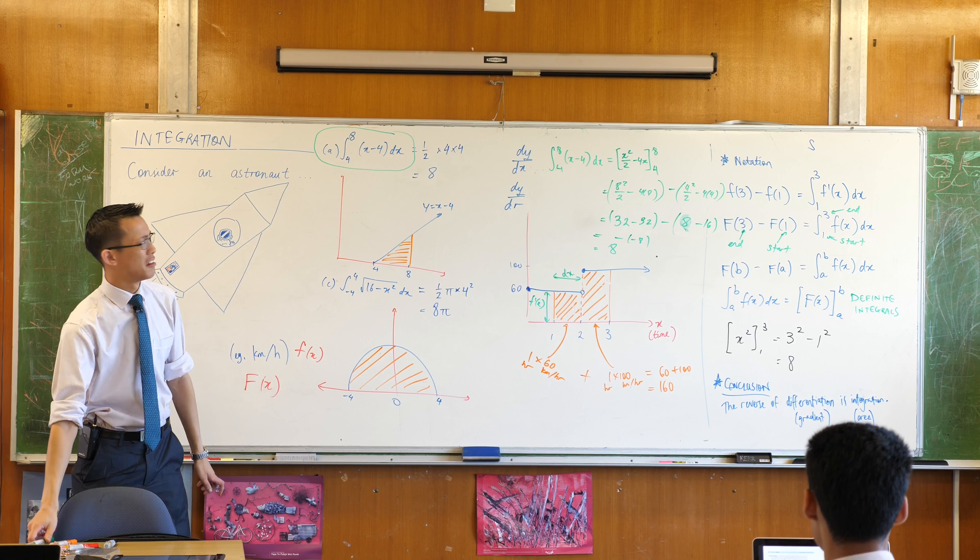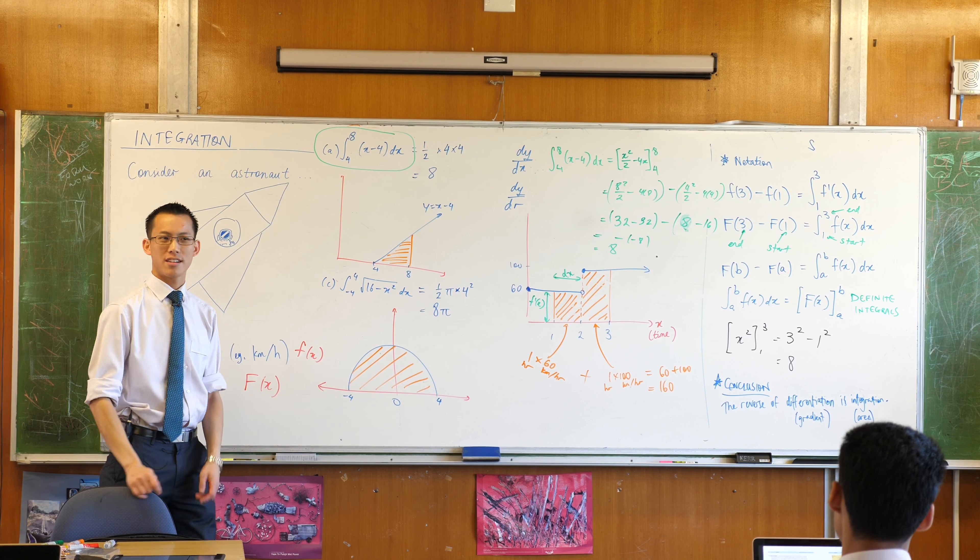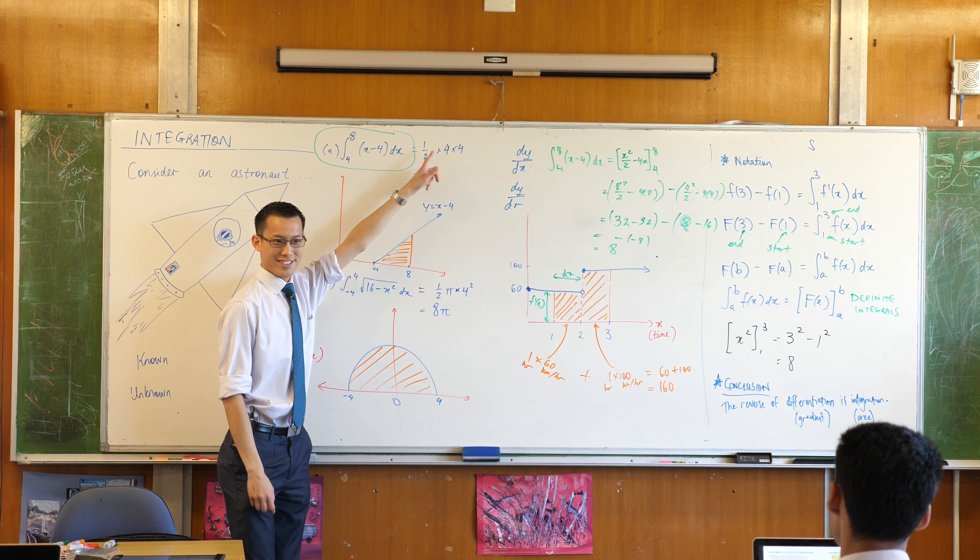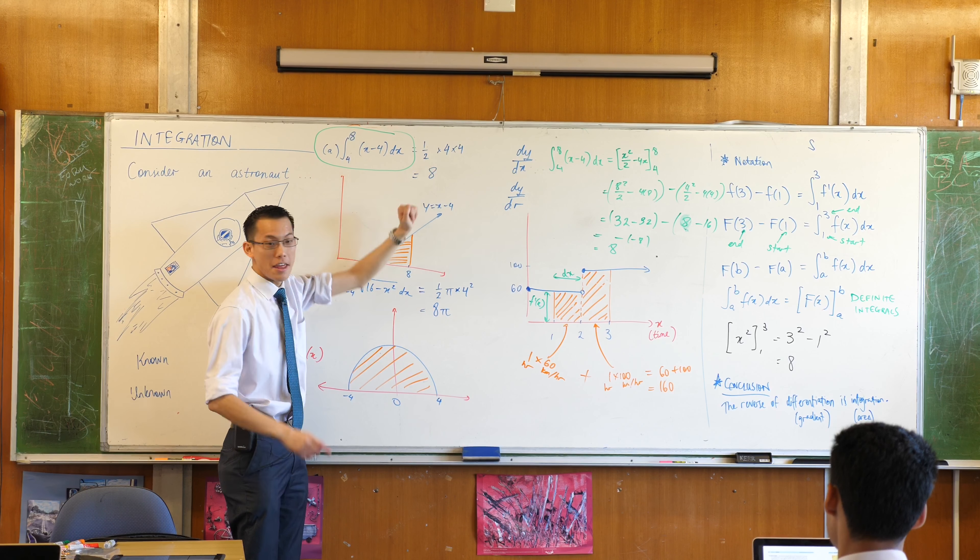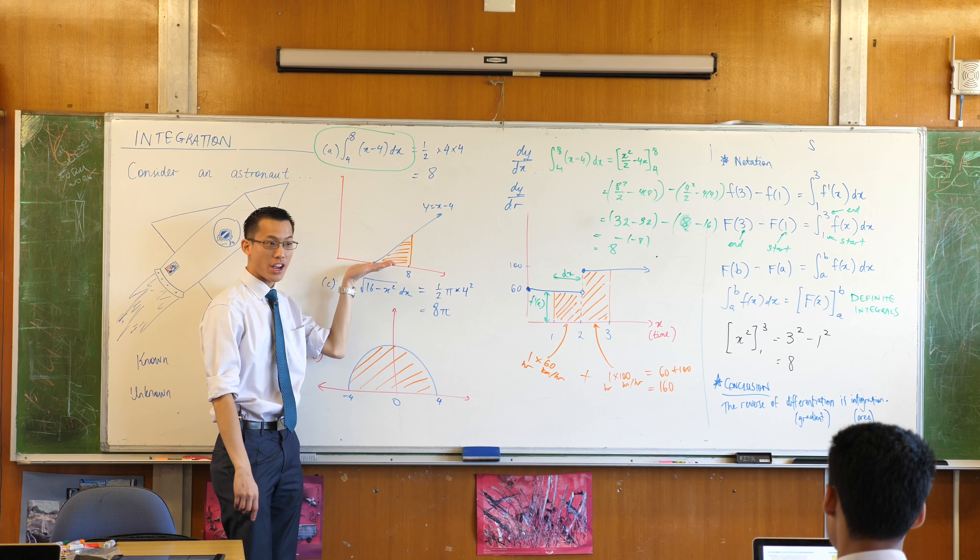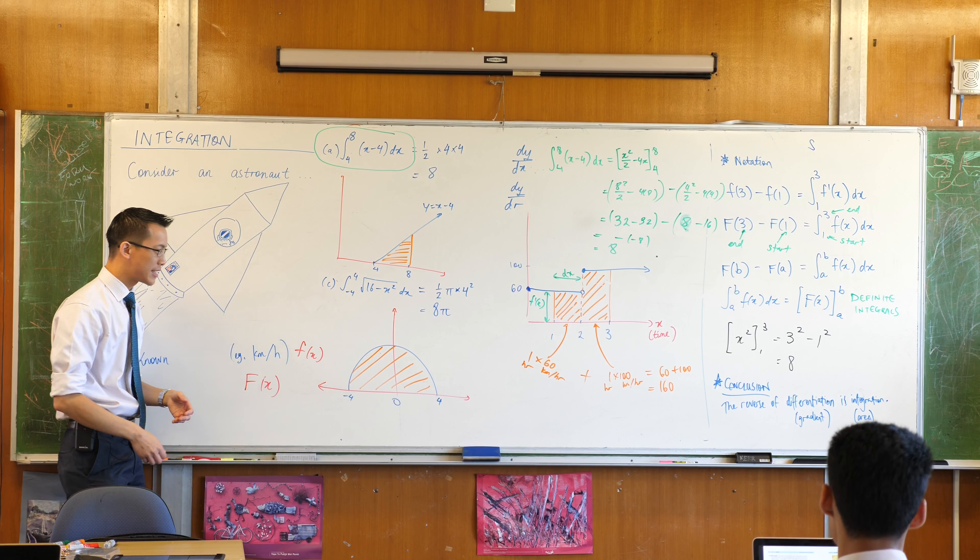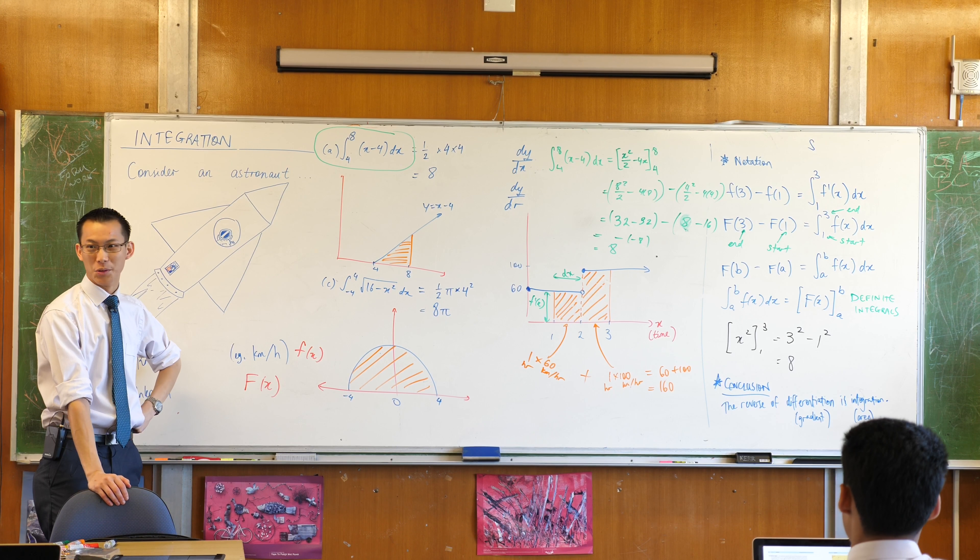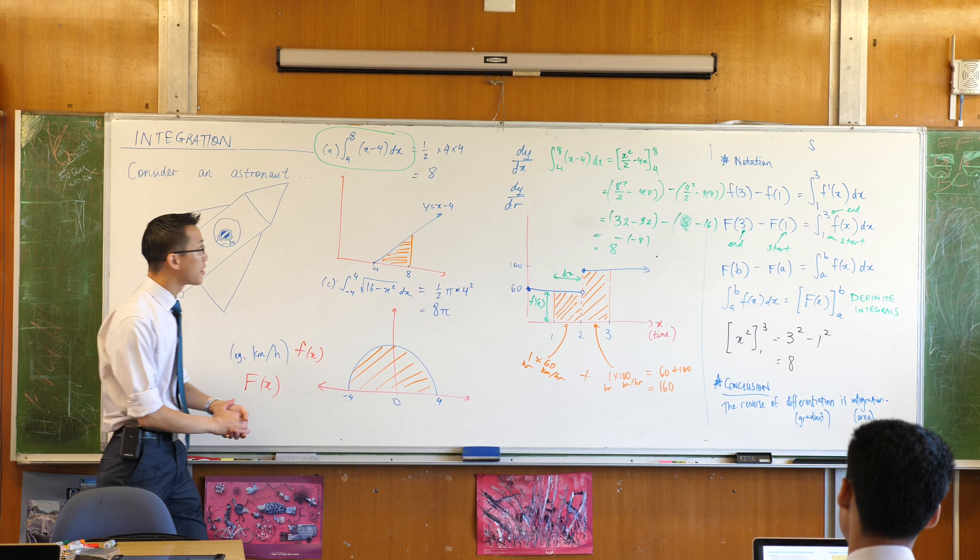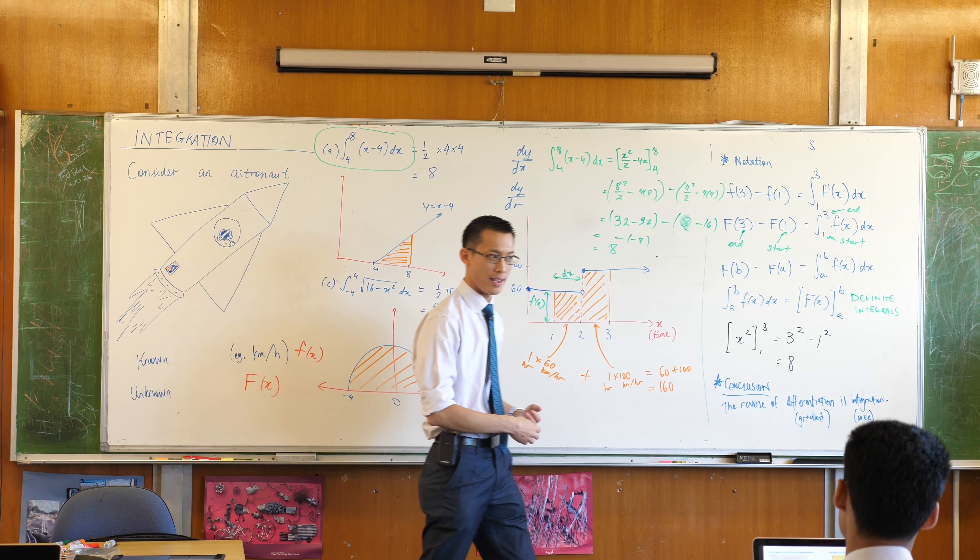Now you're probably thinking, that was a lot of work. I could have just done the triangle and that would have been fine. That's true. When the curve just gives you a triangle. But guess what? You don't always get nice neat triangles or semi-circles. You get other things, which is really what this topic is about.